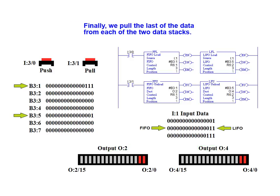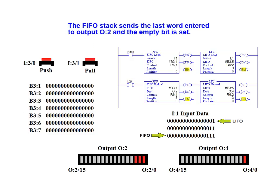And finally, we pull the last of the data from each of the two data stacks. The FIFO stack sends the last word entered to output O:2 and the empty bit is set. The LIFO stack sends the first word we entered to output O:4 and as it's empty, its empty bit is also set.